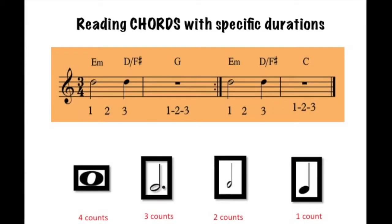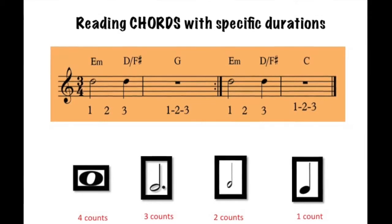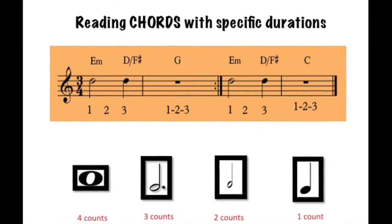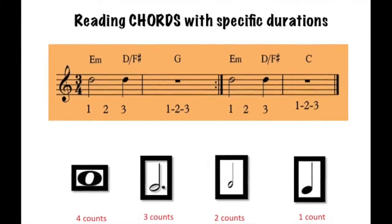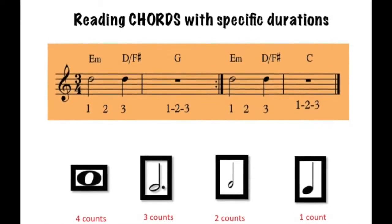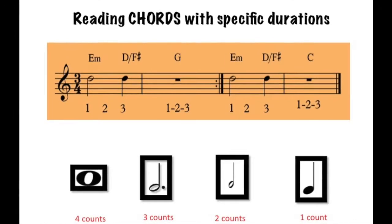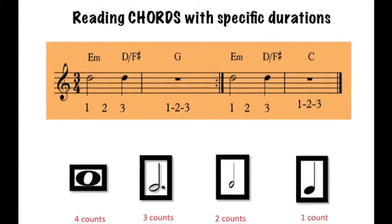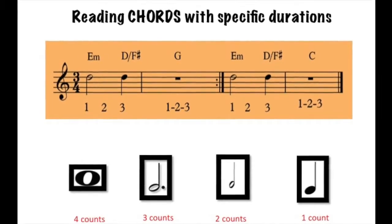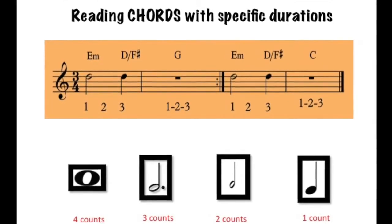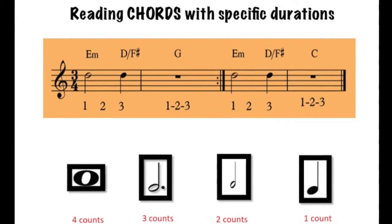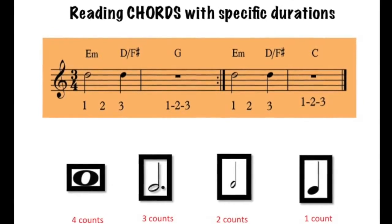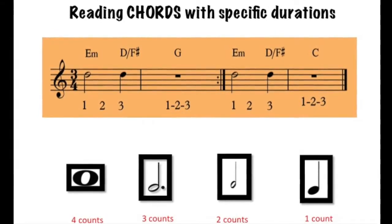It is not necessary that you count each chord evenly. A need for adding specific symbols should be done. Like in the example, a minim — also known as a half note — would mean two counts, and a crotchet — also known as a quarter note — would mean one count.